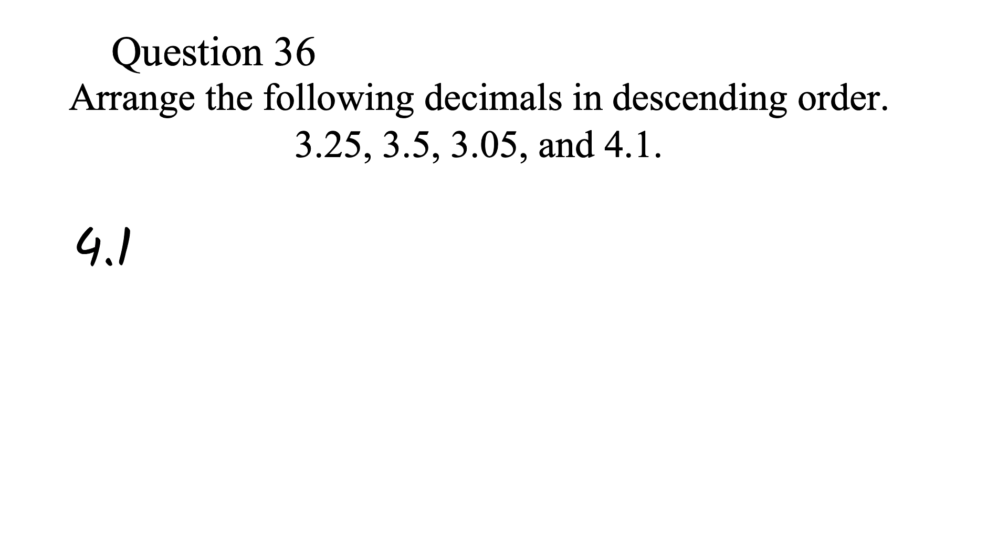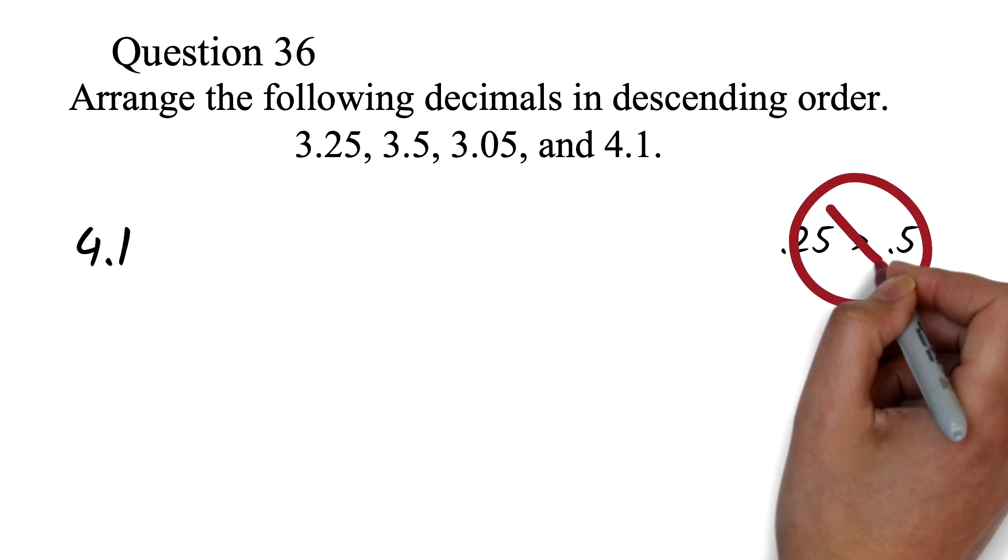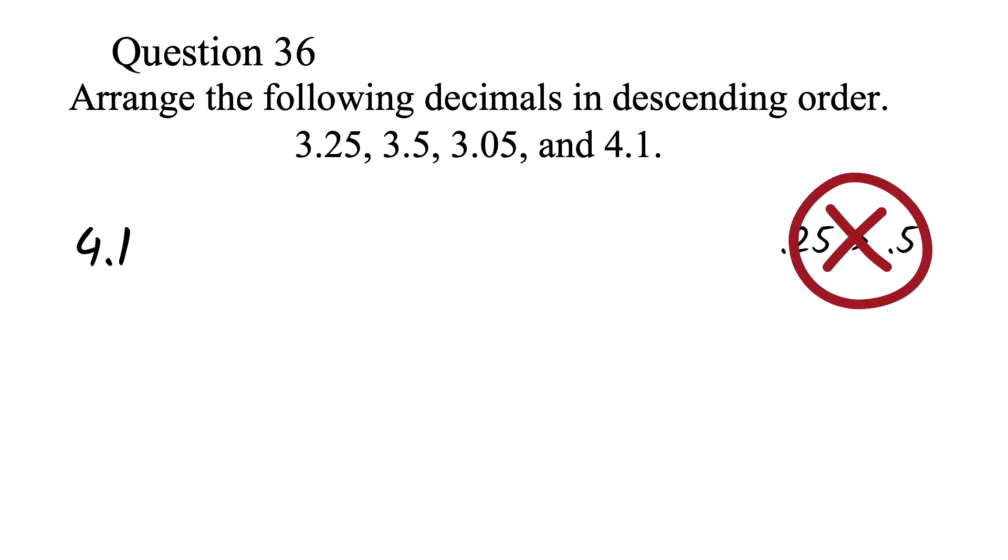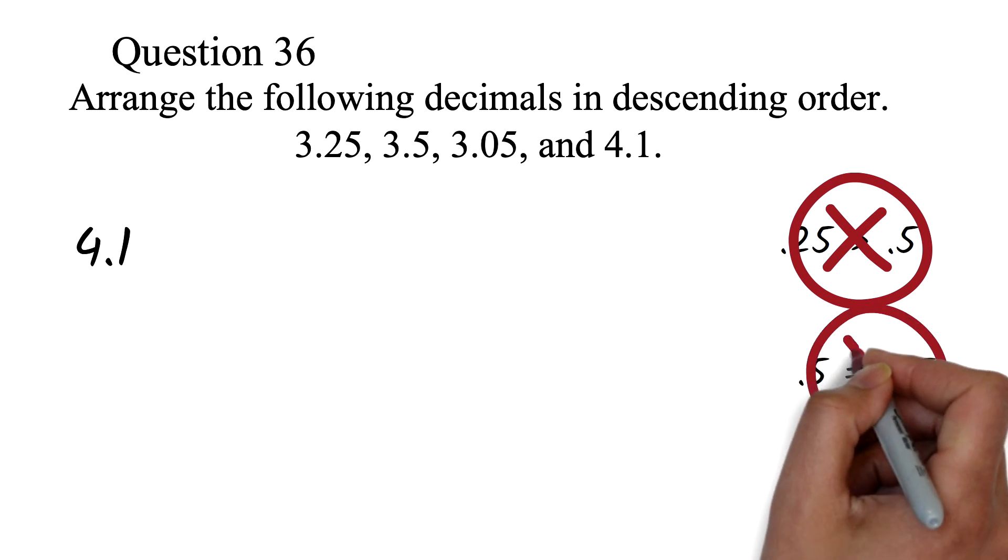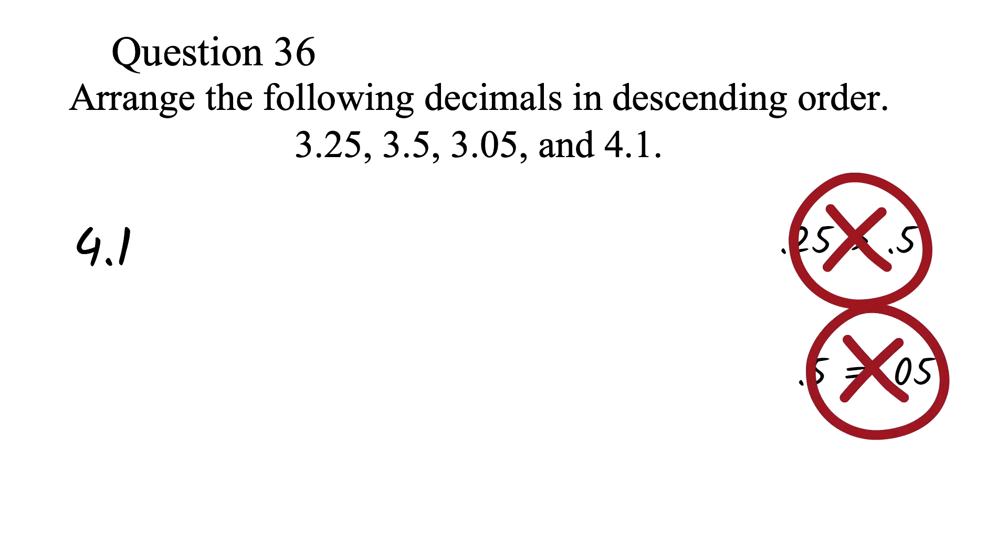Since the next numbers are the same whole number, 3, we compare the decimals. Some students make the mistake of thinking 0.25 is greater than 0.5. They look at it as 25 and 5. That's wrong. Some students also think 0.5 and 0.05 are the same. They look at it as 5 and 0.5. If you want to compare decimals by looking at it that way, then you have to make sure that there are the same number of figures after the decimal point.